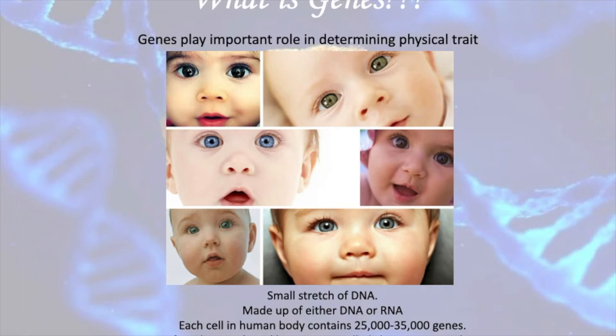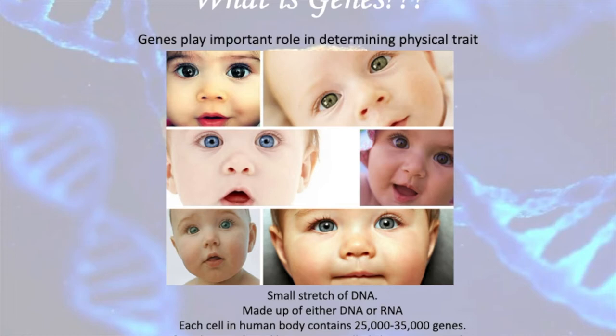In your family, you would have noticed that many cousins look similar to an uncle or aunt. Among children in a family, you can see differences — some have straight hair, some have curly hair, differences in eye color. All these differences exist because each individual is different according to the genes present in their body.